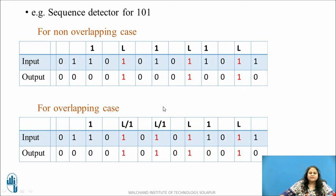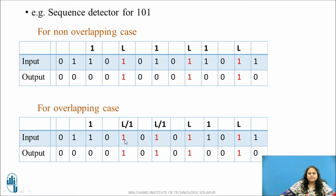On the other hand, consider the overlapping case. Let us assume this is the input bit stream. Again 0 is not the start of the sequence, 1 possibly, but the next bit is 1, so we will not assume this as the start of the sequence. 1 this can be the start of the sequence: 1, 0, 1. Here the sequence is complete, so output is made 1. This is the last bit of the sequence 1, 0, 1. Now this 1 bit can act as a first bit for the next sequence: 1, 0, 1. This is the end of the sequence and output is made 1.